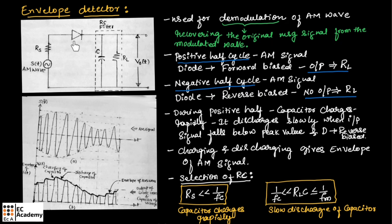This output voltage will be similar to the positive half of the AM signal. During the negative half of the AM wave, the diode will be reverse biased. Hence, no current will flow through the load resistor, and we will not obtain any output voltage. During negative half of the AM wave, the diode will not conduct. Therefore, only the positive half of the AM wave appears across the RC filter.